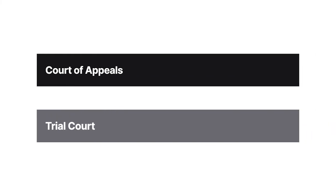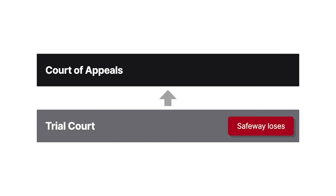Edwards and Westinghouse moved to strike Safeway's pleadings. The court granted the motion, also dismissed Safeway's claims, entered judgment against Safeway on Edwards' claim, and held a jury trial without Safeway's participation to award damages. The jury determined that Safeway owed $89,000. Safeway appealed to the Seventh Circuit.